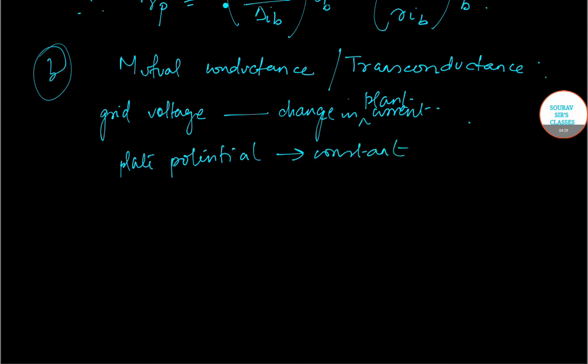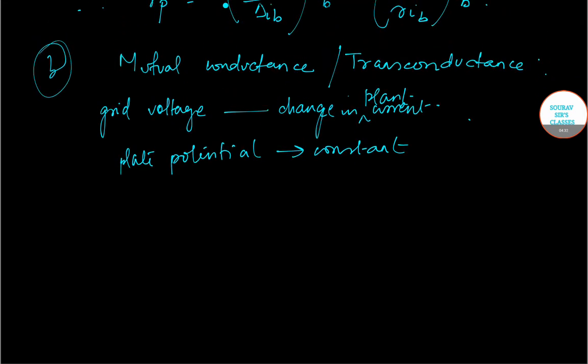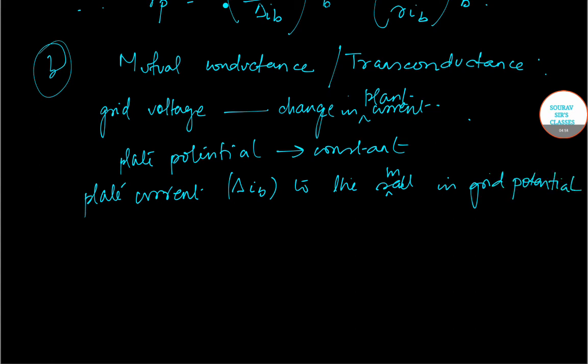Let us look at its definition. It is defined as the ratio of small change in plate current, given by delta IB, to the small change in grid potential, given by delta EC, when the plate potential is actually kept constant.